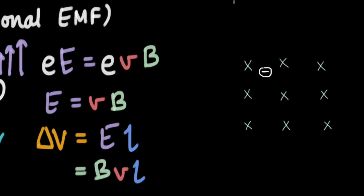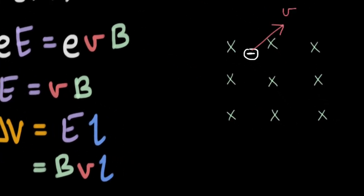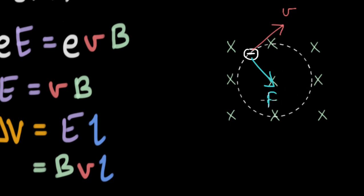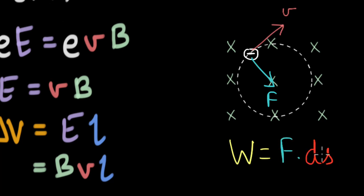For example, if we have field lines and an electron moving in this direction with velocity V, using the right-hand curl rule we can figure out the direction of force on this electron. As a result, this electron traces a circular path. The work done by this force is W = F dot ds. Since ds is in the same direction as the velocity, the angle between the displacement vector and the force is 90 degrees. Expanding the dot product gives F·ds·cos(90°), and cos 90° is 0, so the work done comes out to be zero.